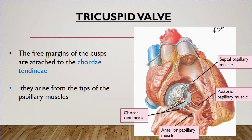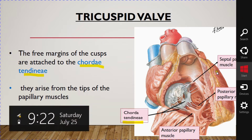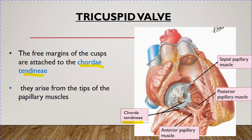The cusps are attached to the chordae tendineae. The chordae tendineae are fibrous tendinous cords which arise from the tips of the papillary muscles. You can see the anterior papillary muscle, the posterior papillary muscle, and the septal papillary muscle. From these papillary muscles, the chordae tendineae arise and attach to the free margins of the cusps — like the strings on a parachute.